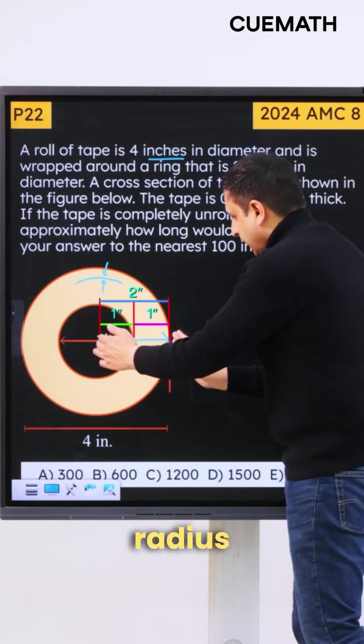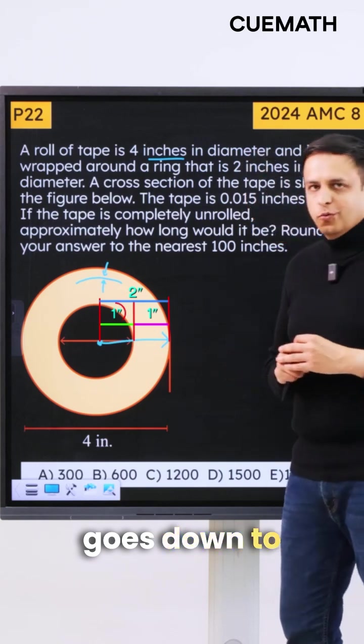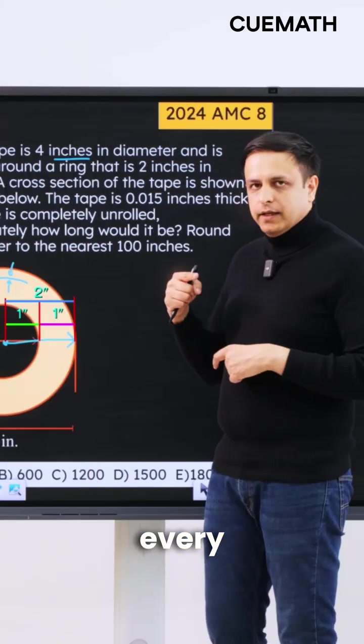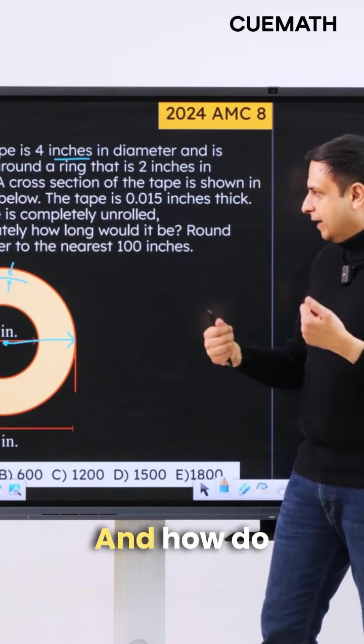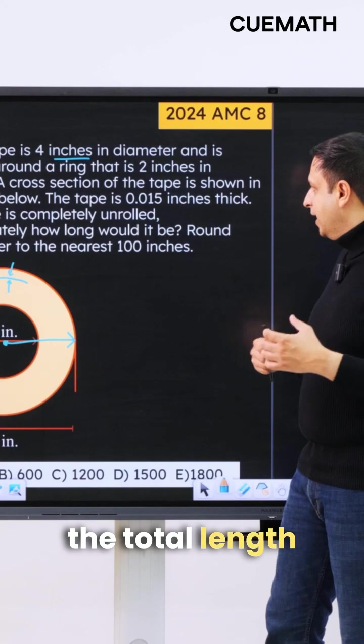And as you keep unrolling the tape, the radius decreases and finally goes down to 1, and therefore every unroll gives you a slightly lower length of the tape. So how do you find the total length of the tape?